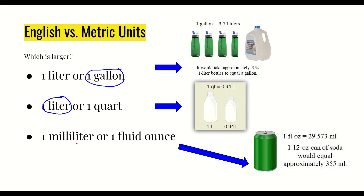Now looking at one milliliter versus one fluid ounce: one fluid ounce is 29.573 milliliters, which means a 12-ounce can of soda equals approximately 355 milliliters. If you look at a can of soda, it will typically list both 12 ounces and 355 milliliters. In this case, one fluid ounce is almost 30 times larger than a milliliter, so we circle the fluid ounce.